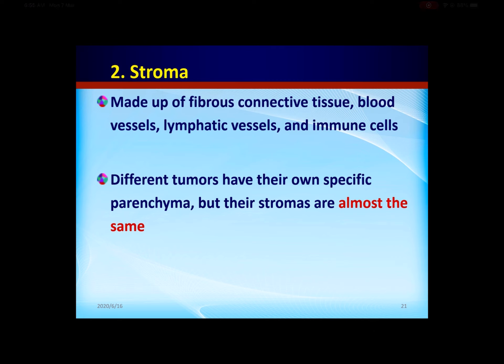The second component is stroma. The stroma is made up of fibro-connective tissue, blood vessels, lymphatic vessels, and immune cells — for example, lymphocytes and macrophages. Different tumors have their own specific parenchyma, but their stroma are almost the same. So the parenchyma is specific, but the stroma is non-specific.